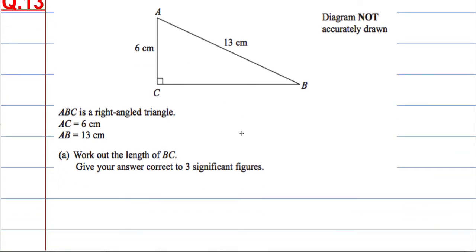This is our classic Pythagoras question. When you're dealing with Pythagoras, we know that the hypotenuse, which is the longest side, H squared, equals the sum of the two other sides squared.